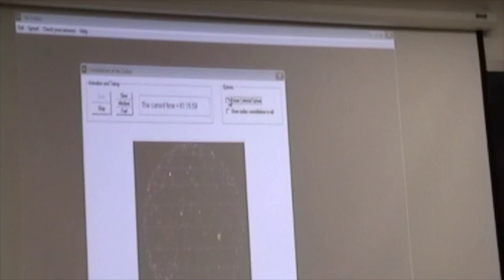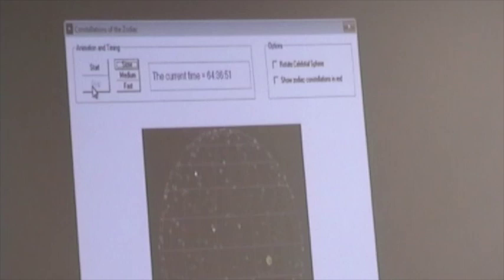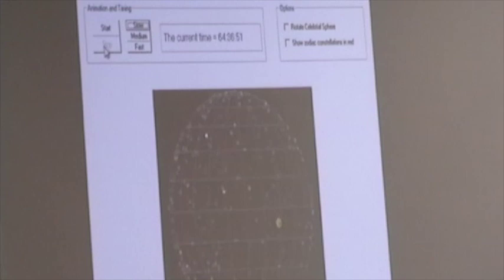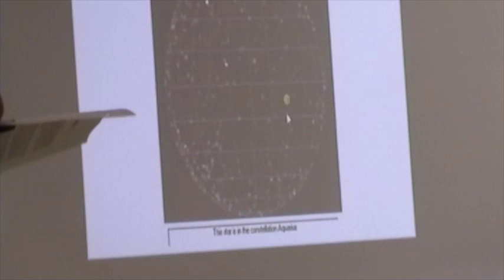For this you will want to make sure that you have rotate celestial sphere off, and I'm just going to stop the animation so we can talk about what this will look like. Similar to the first lab, if I click on a particular star in this constellation, it will tell me the name of the constellation below the image of the celestial sphere.